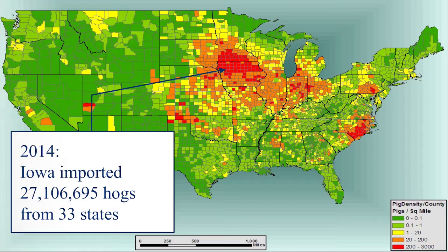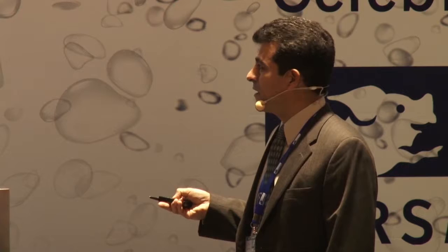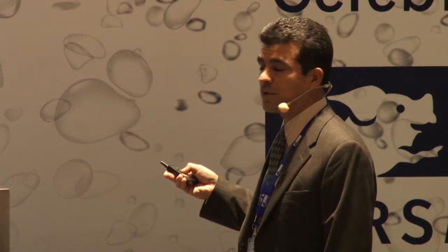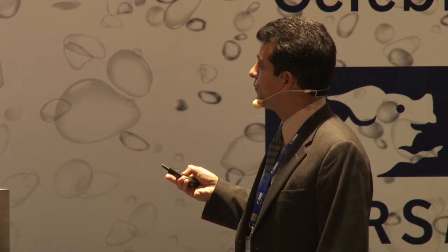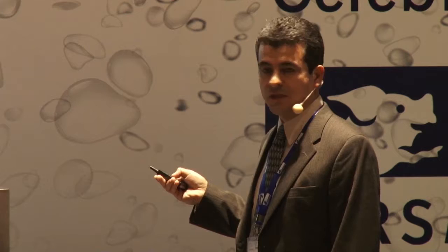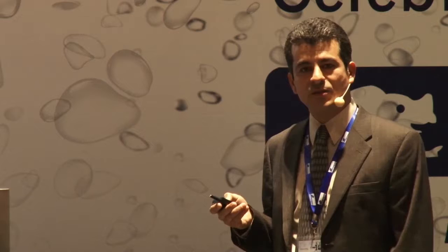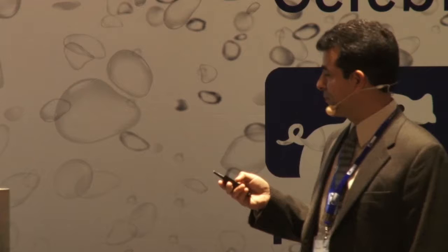Another big difference is the movement of pigs. 100 years ago, most of the production was local. Now we can see a lot of movement of animals between states. In 2014, the state of Iowa imported a little bit more than 27 million pigs from other states and even from Canada. The same is happening in Minnesota, which imported about 12 million pigs. So there is a lot of movement of animals, and when you are moving animals, you are moving diseases with them.